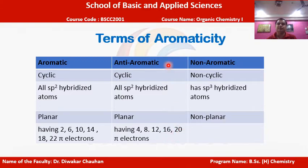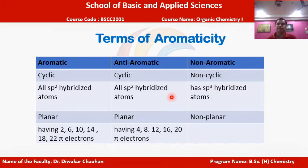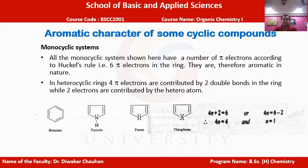For non-aromatic compounds, the conditions must not be satisfied — meaning the compound should not be cyclic (non-cyclic in nature), should not possess sp2 hybridized atoms but instead sp3 hybridized atoms, and should have a non-planar structure. When these conditions are met, the compound is referred to as non-aromatic.